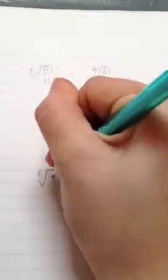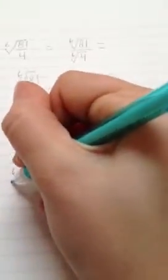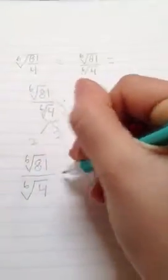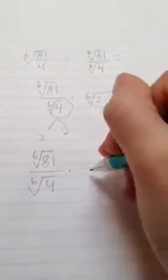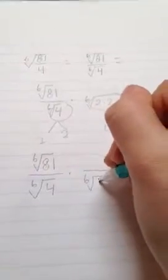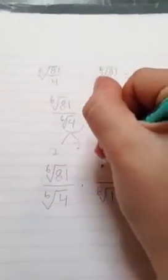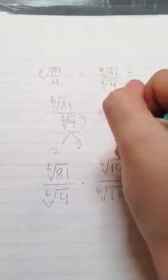So 6th root of 81 over the sixth root of 4 times the sixth root of 16. And then the same thing, 6th root of 16.